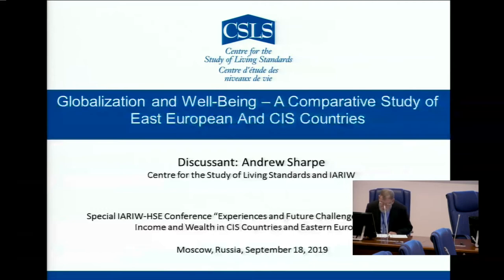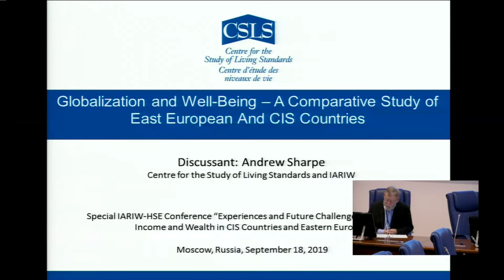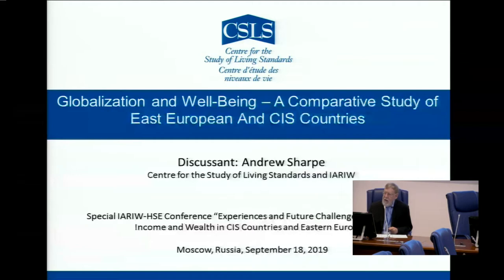The econometric results are interesting: a 1% increase in globalization results in about a 0.2% increase in well-being in both Eastern Europe and CIS countries. A 1% increase in GDP per capita results in only about a 0.2% increase in well-being in Eastern Europe, but a 0.5% increase in CIS countries. So economic growth seems a lot more important in the CIS countries than in Eastern Europe — it would be good to expand on that, perhaps because they have a lower level of development. Governance and corruption are also key factors that aren't really addressed.